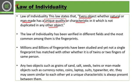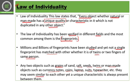This law of individuality has been verified in different fields. The most common among them are fingerprints. Fingerprints are unique structures and no two people have the same fingerprint. Millions and billions of fingerprints have been studied and not a single fingerprint has matched another, whether it's twins or two fingers of the same person — we don't have the same fingerprint on any two of our own fingers. Any two objects such as grains of sand, salt, seeds, twins, or man-made objects such as currency notes, coins, laptops, suits, typewriters — they all have some unique characteristic features. They may seem similar to each other, but they have unique characteristics which are always present between them.